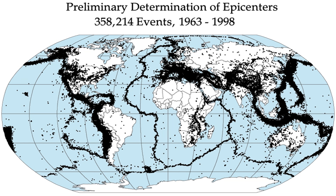Examples are the earthquakes in Chile 1960, Alaska 1957, and Sumatra 2004, all in subduction zones. The longest earthquake ruptures on strike-slip faults, like the San Andreas fault (1857, 1906), the North Anatolian fault in Turkey, and the Denali fault in Alaska, are about half to one-third as long as the lengths along subducting plate margins, and those along normal faults are even shorter.